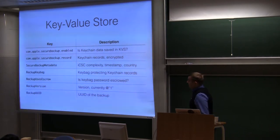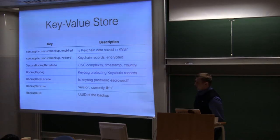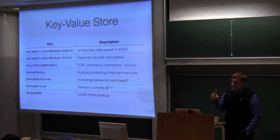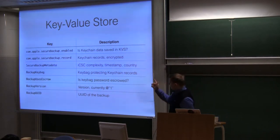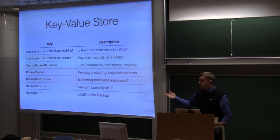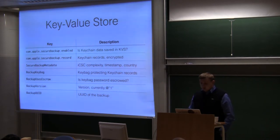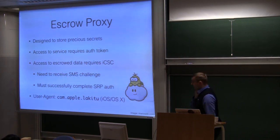The uploaded keys include metadata such as iCloud security code complexity — a flag indicating whether the security code is four digits or more complex — along with a timestamp and country. Another field indicates whether the escrow service is used. The keybag is encrypted with the master password, with no indication of the master password itself. As we established, the master password is sent to the escrow proxy.